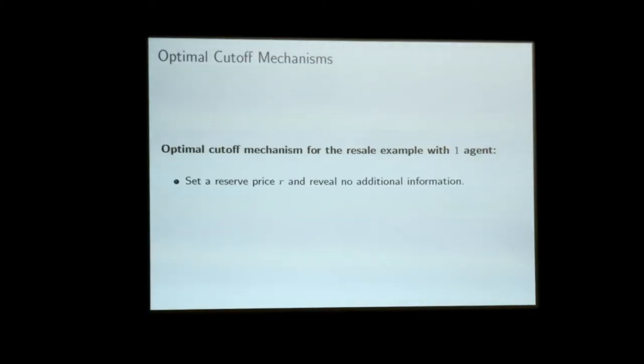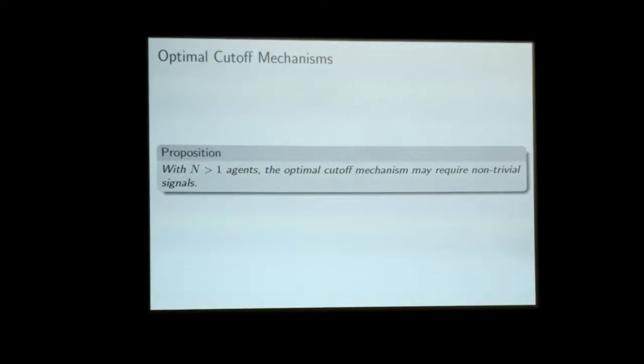Using this general result, I can show that with the simple resale example, the optimal mechanism is to set a reserve price — where the reserve price will depend on my objective function, depending on whether I put more weight on revenue or surplus maximization — but in any case, I don't reveal any additional information about the agent's type. Notice it's not a fully private mechanism in that we know at least that the agent's type is above the reserve price, but no additional signals are sent. Now, this result is not true for multiple agents. If you have more than one agent in the mechanism, then the optimal cutoff mechanism will often require some non-trivial information disclosure.